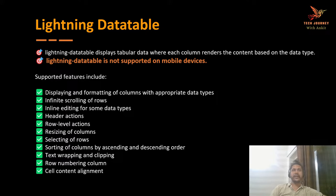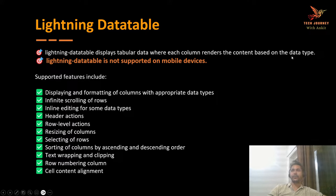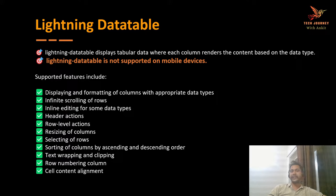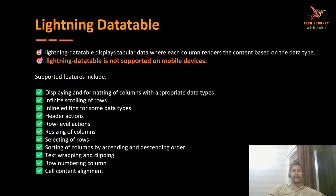So let's try to understand what is lightning data table. Lightning data table is useful whenever you want to display data in tabular form, where each column renders content based on the data type. In data table, the data is rendered in tabular form based on the data type. By default, if you are not specifying any data type, the default data type is text. Also, lightning data table is not supported on mobile devices — it is only for desktop devices.